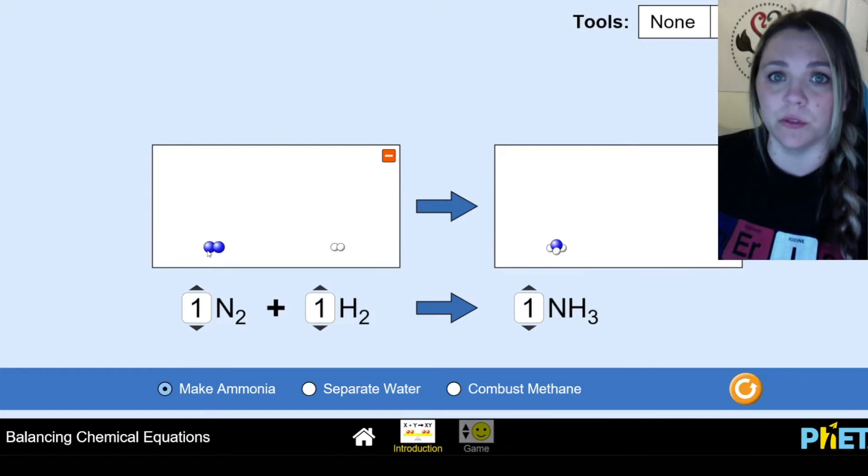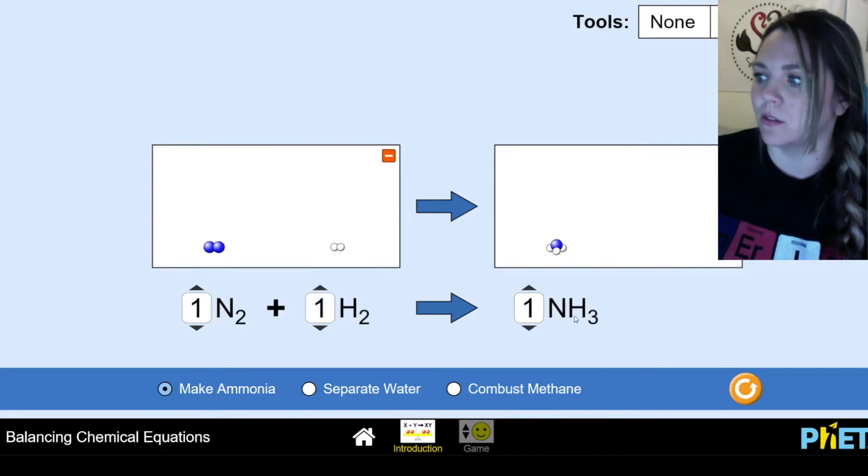I start with one, two blues. I better end with two blues. I only ended with one. So my blues, my nitrogens are not balanced. I started with two nitrogens, I only have one. So click up on this side to two, so that way you have two nitrogens here, two blues on your products, two blues on your reactants. Cool.